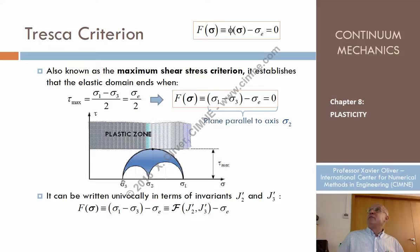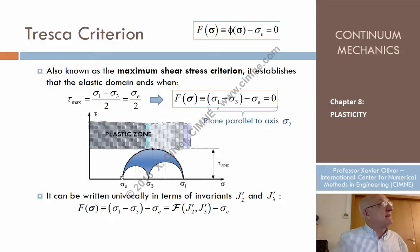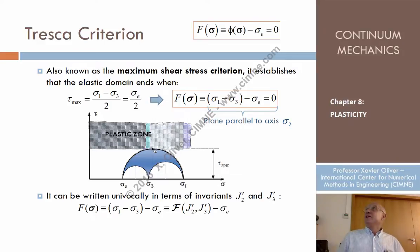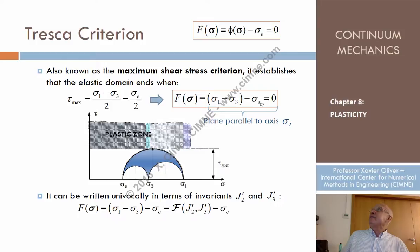In triaxial stress states, the Mohr circle is what? In hydrostatic stress states, the Mohr circle is a point. So you will never fail, even for infinite values of the stresses. But as soon as we have different first and third principal stresses, which determine the maximum shear stress, the material may fail. This translates, written in terms of a function, as sigma_1 minus sigma_3 minus sigma_e equals zero, where sigma_e is the uniaxial elastic limit.